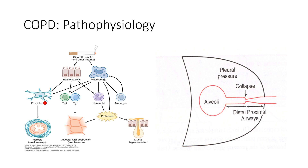We also see fibroblastic proliferation, so we see fibrosis of the small airways. We also see alveolar wall destruction and mucus hypersecretion. Especially with smoking being a top cause, if you're repeatedly exposing your lungs to a particulate or noxious gas, it's going to cause problems. We can tolerate a little dust in the air, but repeated exposures really start running into problems.